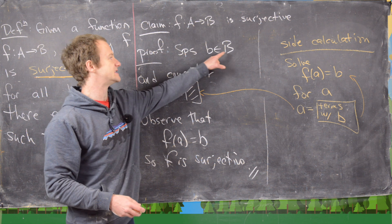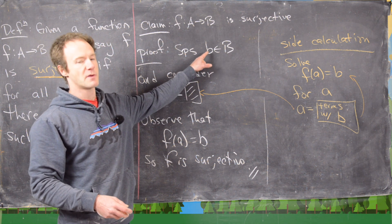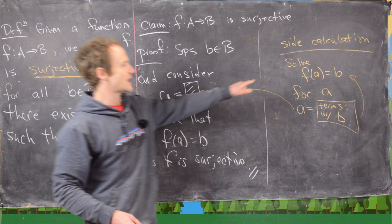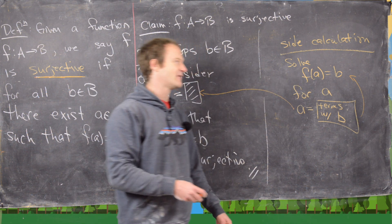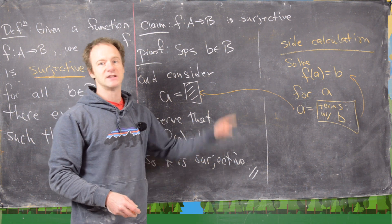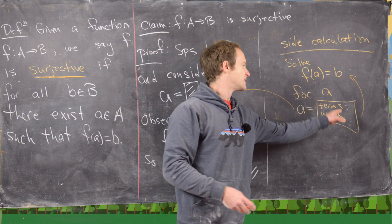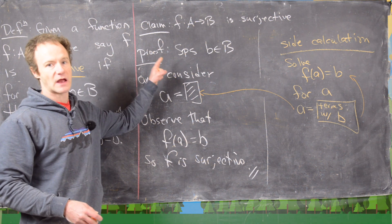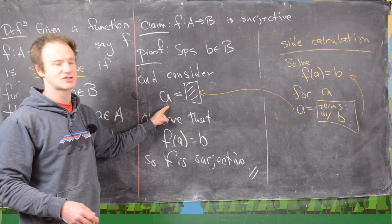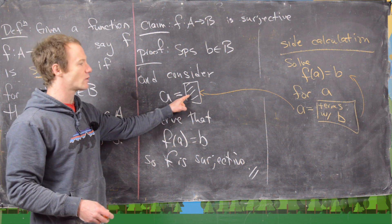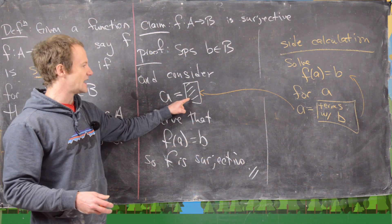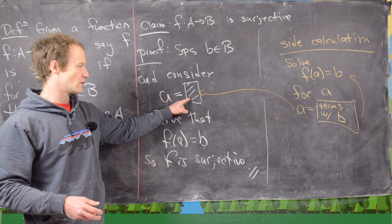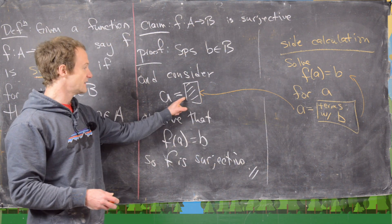We suppose that b is in B, so b is an arbitrary element. Our goal is to find an element a from the domain that's mapped to b. We do that via a side calculation: we solve the equation f(a) = b for a, which gives us a equals some combination of terms involving b. When writing up the proof, it seems a little magical — what we do is consider a equal to just this complicated object involving b from our side calculation.